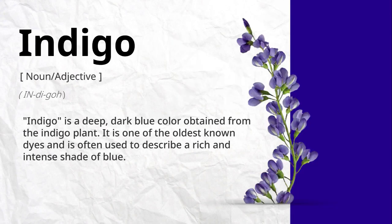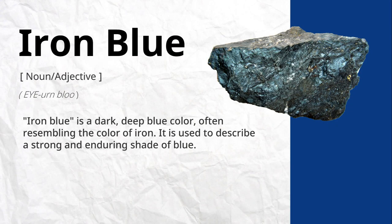Indigo is a deep, dark blue color obtained from the indigo plant. It is one of the oldest known dyes and is often used to describe a rich and intense shade of blue. Iron blue is a dark, deep blue color, often resembling the color of iron. It is used to describe a strong and enduring shade of blue.